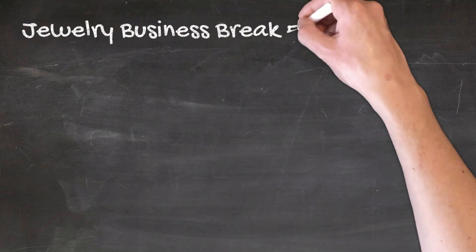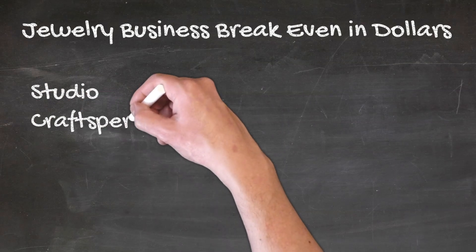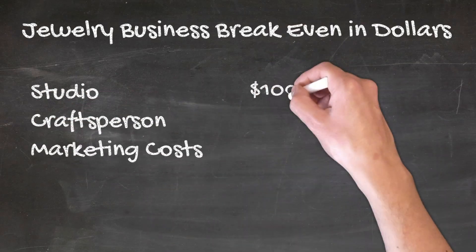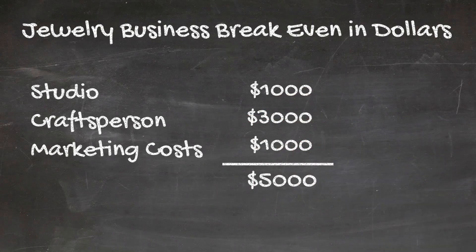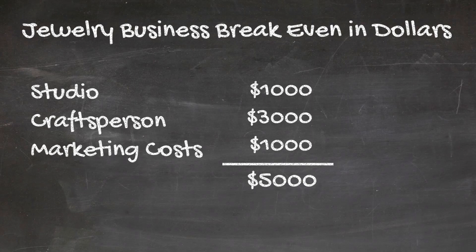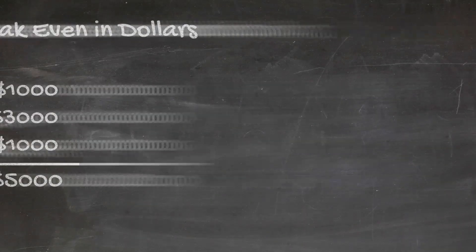Now let's switch to a jewelry business — you make beaded jewelry, which by the way is extremely lucrative. The actual cost for the inputs for a beaded bracelet is only a few cents. Let's assume you have a studio at $1,000 a month, marketing at $1,000 a month, and a person to help you make the jewelry at $3,000 a month. So your total fixed costs are $5,000 a month.